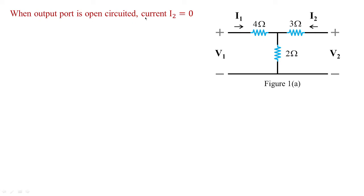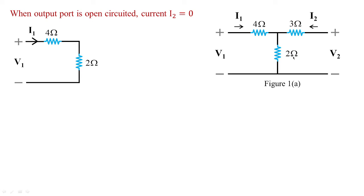When the output port is open-circuited, the 3 ohms element is removed and v2 measures the voltage across 2 ohms. So figure 1a is changed to figure 1b, where i1 flows into the closed circuit with v1 as input, and 4 ohms and 2 ohms are connected in series because 3 ohms is gone.